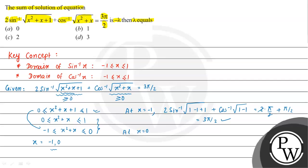Similarly, at x = 0: we get 2 sin⁻¹(√(0 + 0 + 1)) + cos⁻¹(√(0 + 0)) = 2 sin⁻¹(1) + cos⁻¹(0) = 2·(π/2) + π/2 = π + π/2 = 3π/2. So this also satisfies the condition.